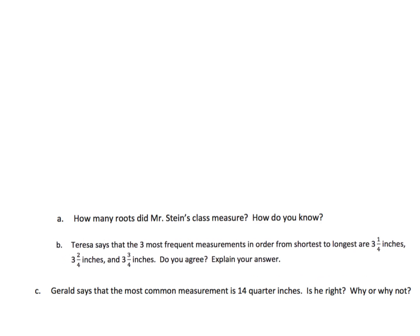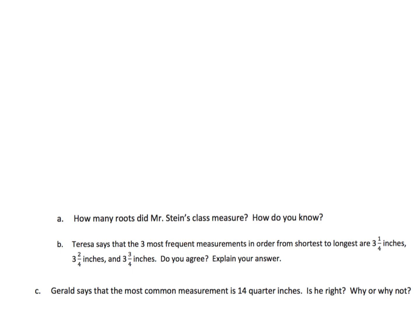For B, Teresa says that the three most frequent - and there's an important vocabulary word that you might want to put on our word wall, especially for your English language learners - most frequent measurements in order from shortest to longest are three and a quarter, three and two quarters, and three and three quarters. So the idea is we're going to look for three and a quarter, where's three and a quarter, there's three and a quarter. And then three and two quarters is right here, and then three and three quarters is right here. Those are the most frequent measurements in order from shortest to the longest. Do we agree? And the answer is no, we don't agree. These two are the big ones, but this one should not be included. Actually, three inches should be included. These are the three most frequent measurements because they've got the most votes. It's kind of like you could think of it like votes.